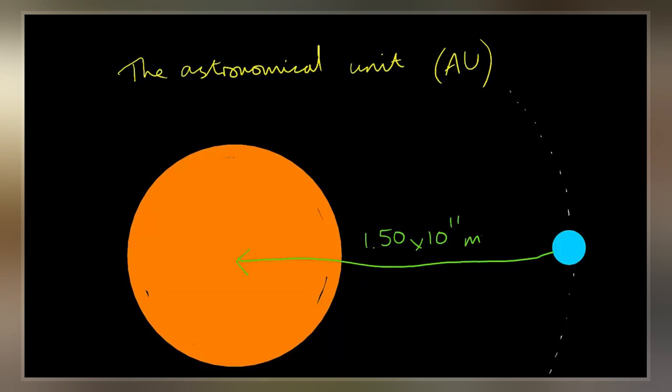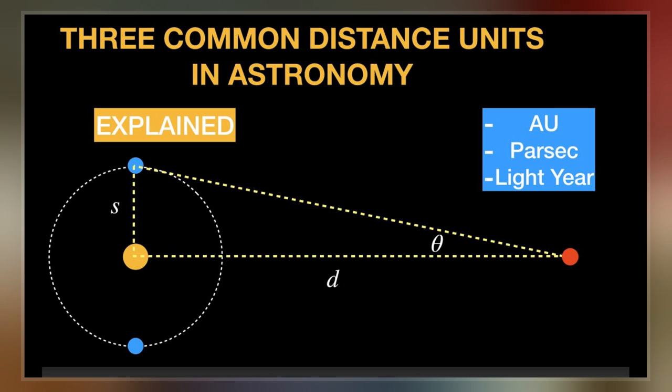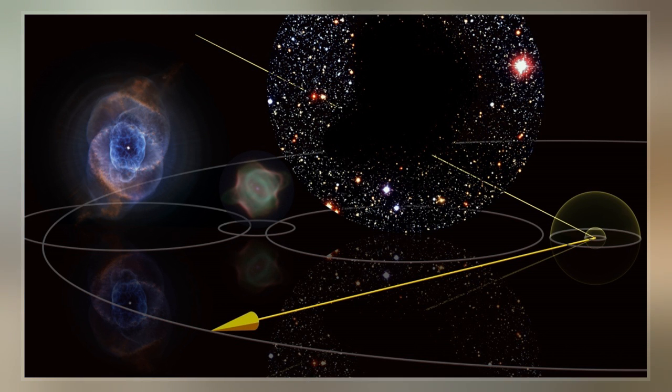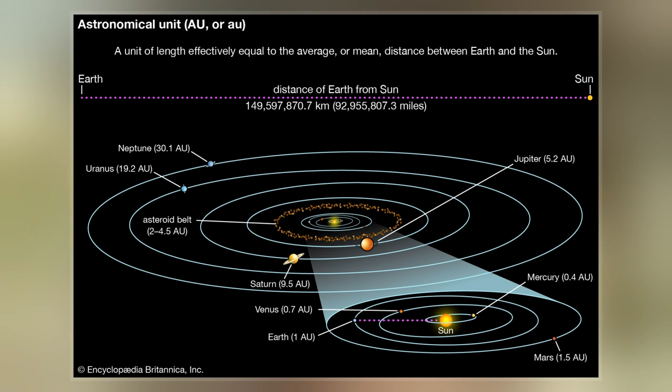Originally conceived as the average of Earth's aphelion and perihelion, since 2012 it has been defined as exactly 149,597,870,700 meters. The astronomical unit is used primarily for measuring distances within the solar system or around other stars.